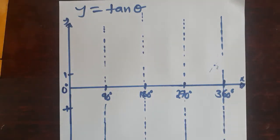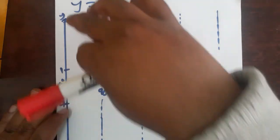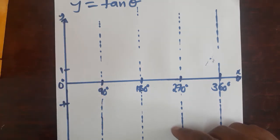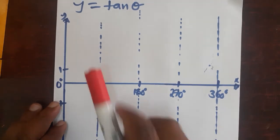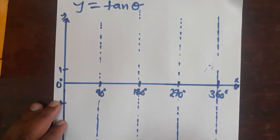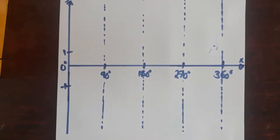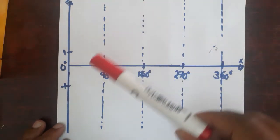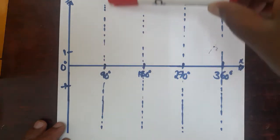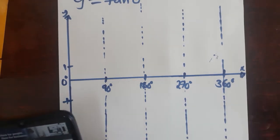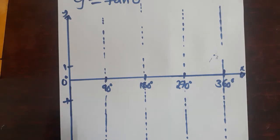Now we deal with the tangent. You can see that deliberately the lines here for the tangent are longer than those for cosine and sine — for obvious reasons. The dotted lines for sine and cosine were horizontal, but for the tangent they are vertical. When dealing with the tangent, the graphs usually move from a point going upwards.